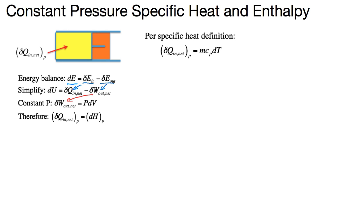Now, if we rearrange this equation, we get dU plus W_out net equals delta Q_in net. Since the moving boundary work equals PdV, let's replace this with PdV. And this is actually dH, the enthalpy change of the system. Because of this, we get this equation.